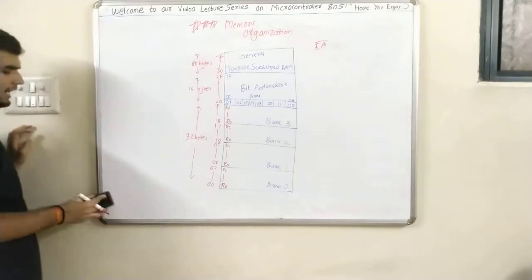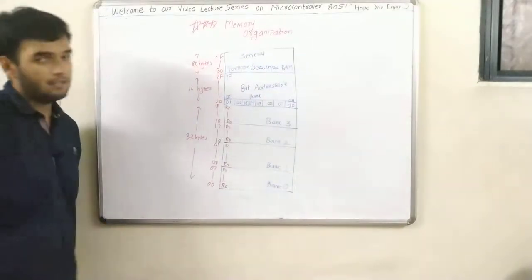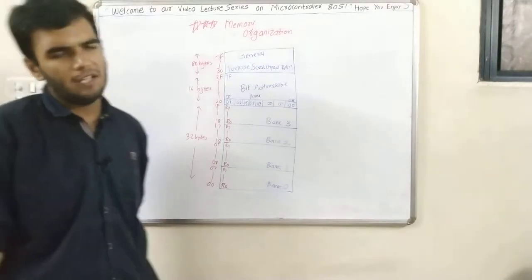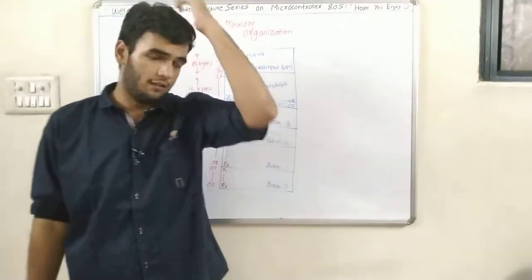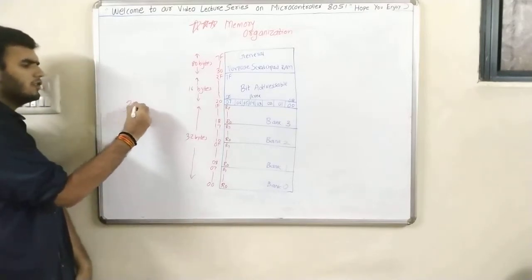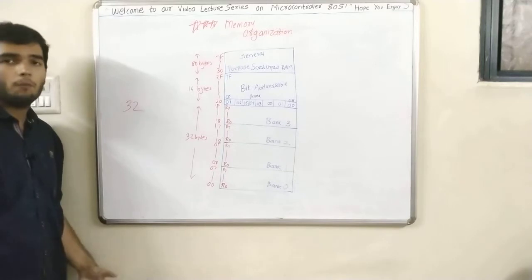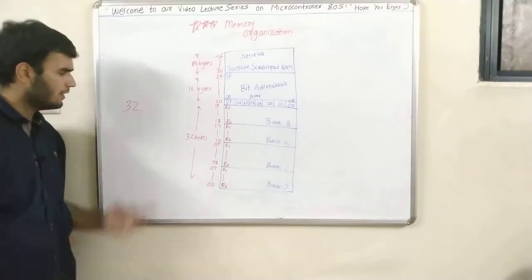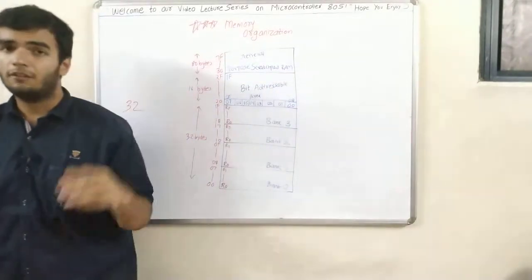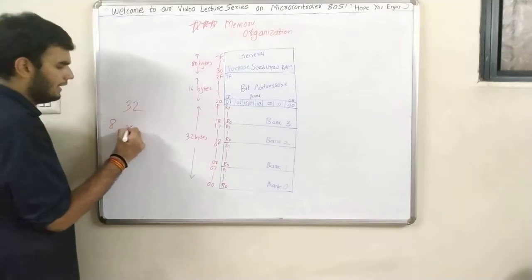Now we will study about the internal RAM in detail. How much is the internal RAM? It is 128 bytes divided into 32 bytes, 16 bytes, and 80 bytes, which make 128 bytes in total. You already know there are 32 general purpose registers which we can use for arithmetic or logical operations.